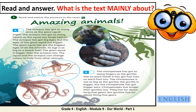Read and match the pictures to the texts. The octopus has got as many arms as the giant squid — 8. The octopus has got as many hearts as the squid — 3 hearts. The octopus has got big eyes, but the eyes of the giant squid are bigger. The giant squid has got the biggest eyes of all the animals. Its eye is as big as a beach ball. The giant squid is bigger than the octopus too. The squid and the octopus can change colour to hide from other animals. The chimpanzee has got as many fingers as the gorilla — 5 on each hand. It has got 5 toes on each foot too. The chimpanzee is not as big as the gorilla; the gorilla is bigger. But the chimpanzee has got bigger ears. Chimpanzees live longer than gorillas too — about 45 years, while gorillas live for about 35 years.